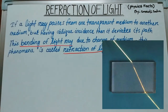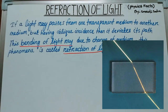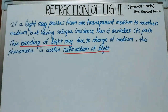Now go to picture 3. If rays pass through a glass slab, the emergent ray deviates or shifts from its actual path. This shift is called lateral shift. We will study this more elaborately later. This is also due to bending of light, or refraction of light.